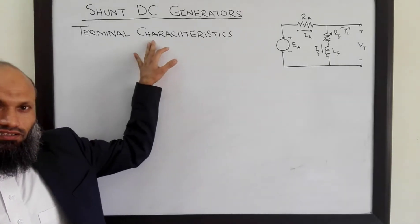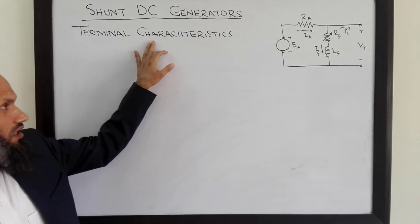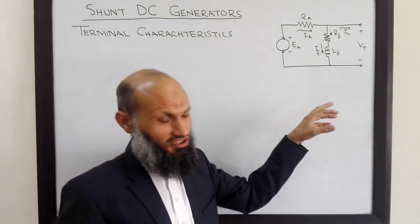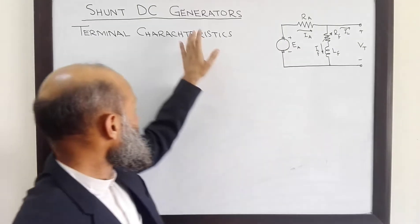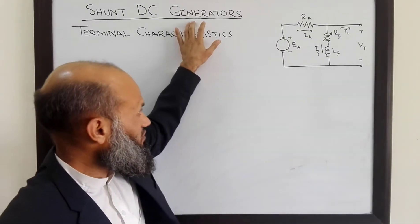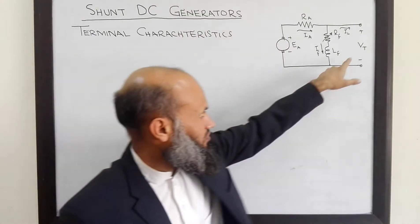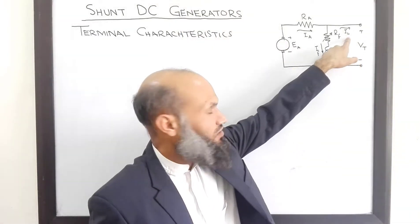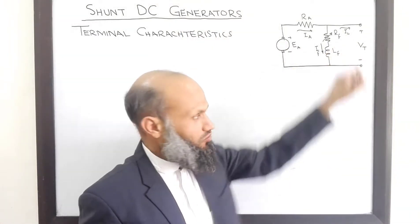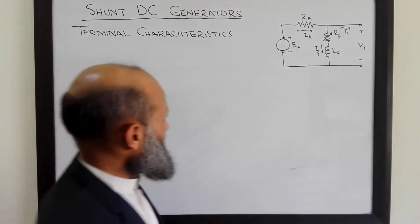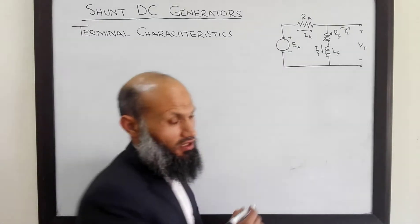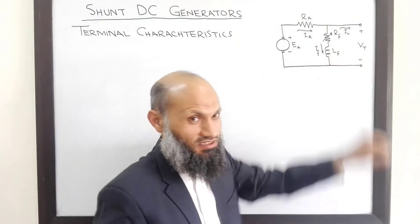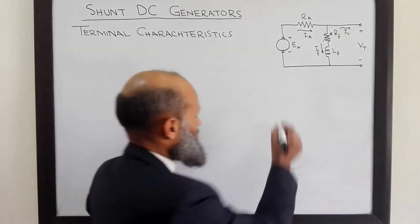Terminal characteristics are the plot of terminal quantities. For a shunt DC generator, terminal quantities are the terminal voltage and the load current. So, terminal characteristics is a plot of load current versus the terminal voltage.